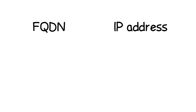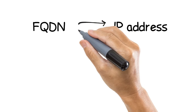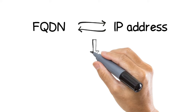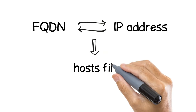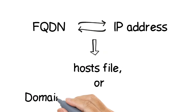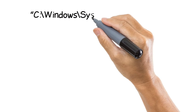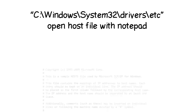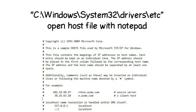Fully Qualified Domain Names are mapped to IP addresses, and IP addresses are mapped to Fully Qualified Domain Names with the help of either a host file or the Domain Name System, which we call DNS. If you want to see the host file, go to the specified location and open the host file with Notepad. You will see the following file.